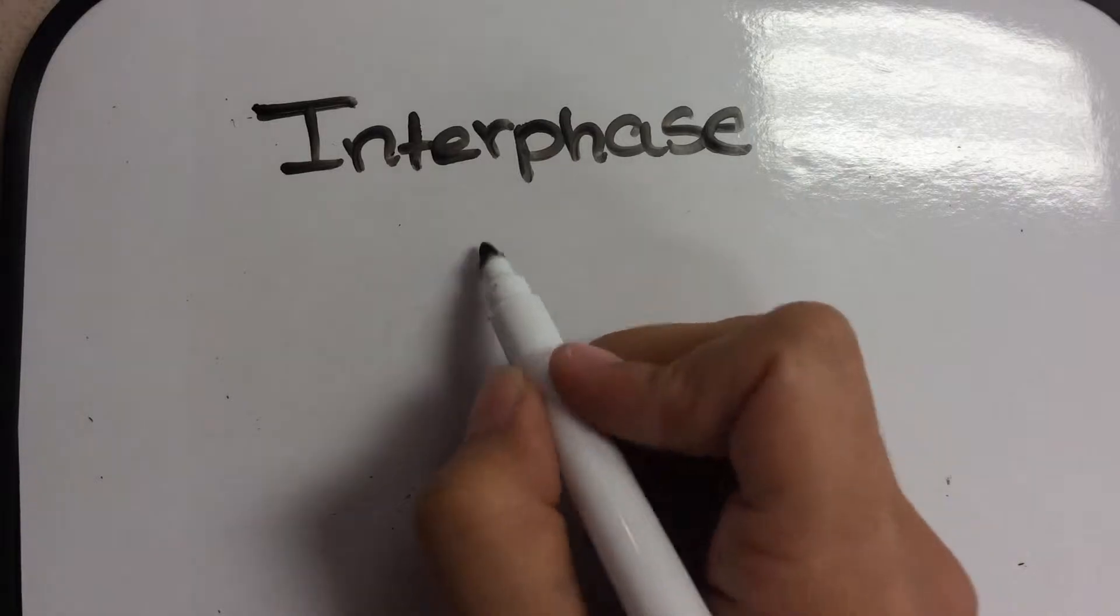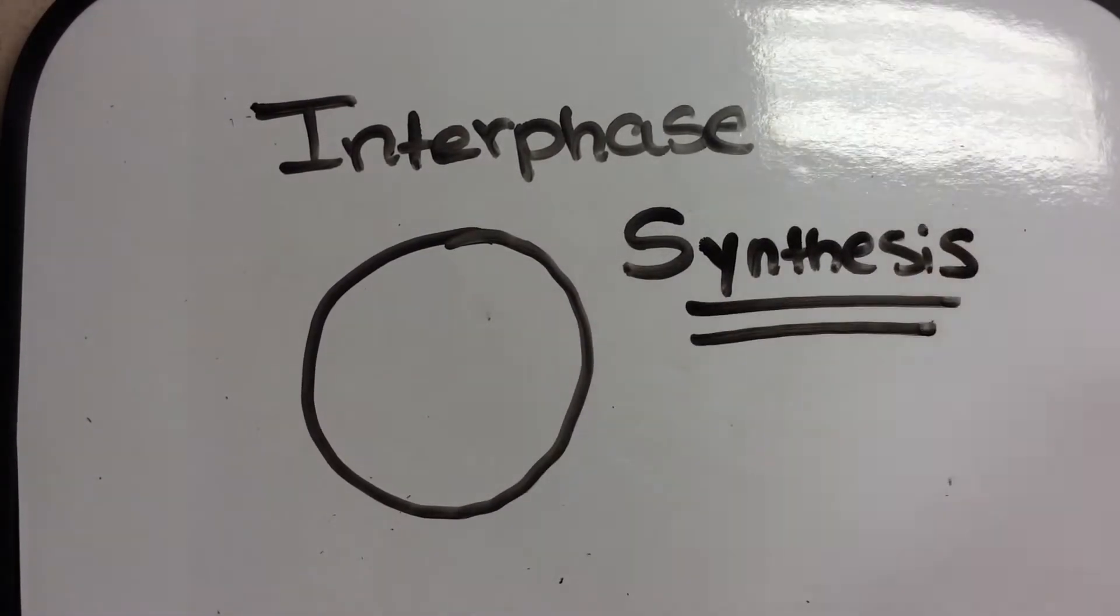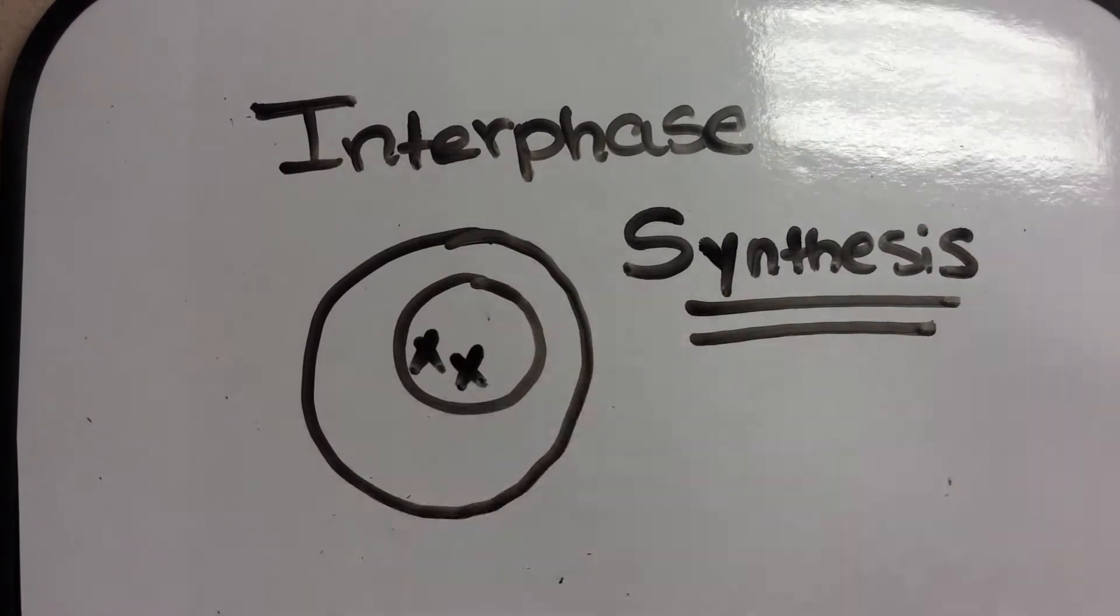The next phase is called the S phase, which stands for synthesis. DNA is synthesized in this phase. It is created.